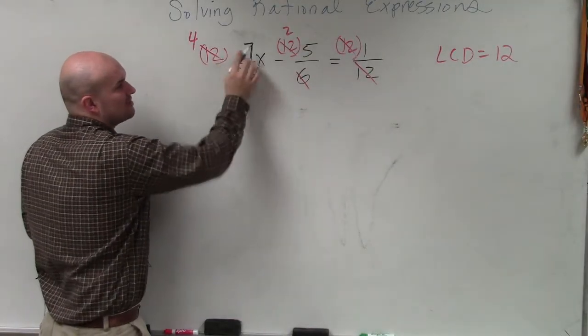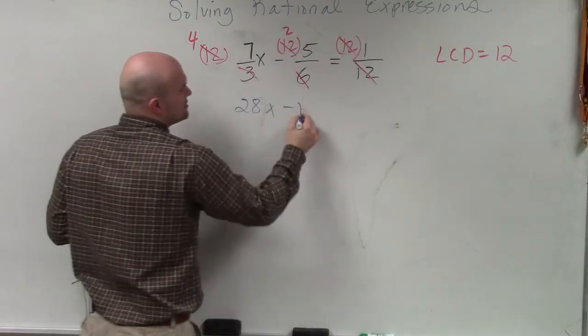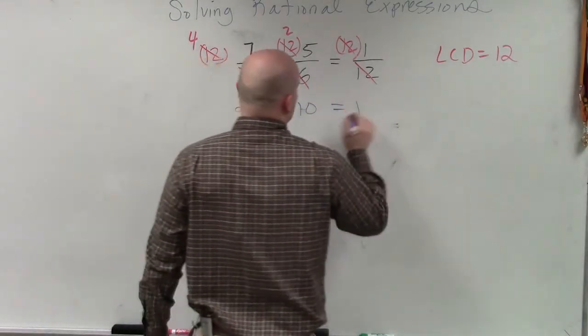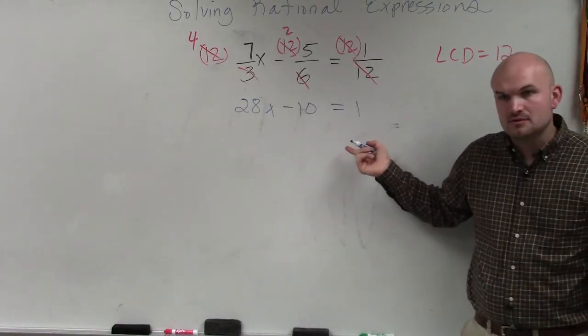So now, I have to multiply 4 times 7x, which is 28x. 2 times 5, which is 10, equals 1. Does this look like something that's a little bit easier now to solve? Yeah.